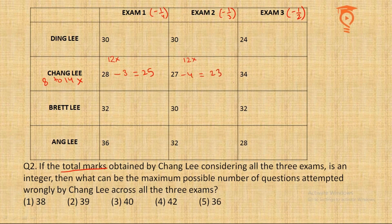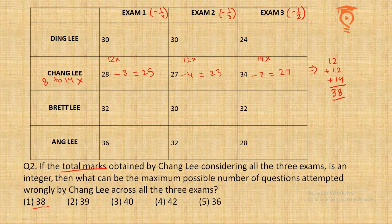For integer scores per exam: in Exam 1 (negative 1/4), take 12 wrong — subtract 3, final score 25. In Exam 2 (negative 1/3), take 12 wrong — subtract 4, final score 23. In Exam 3 (negative 1/2), take 14 wrong — subtract 7, final score 27. Total wrong answers: 12 + 12 + 14 = 38. Many would mark 38, but we only needed the total to be an integer — not each individual exam score.